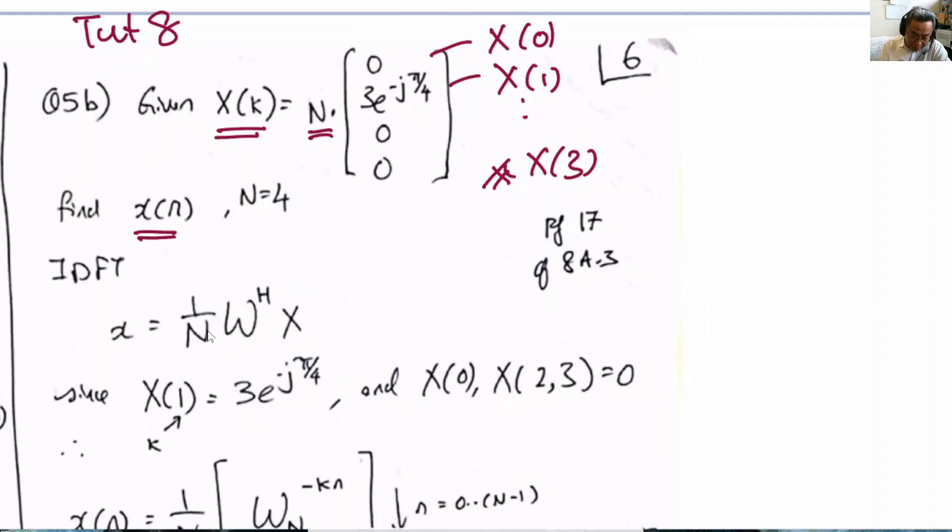This process is called inverse DFT because in the previous example we went from small x to capital X, and now we want to go from capital X to small x. So it looks like an inverse problem, and that's why it is called inverse DFT.